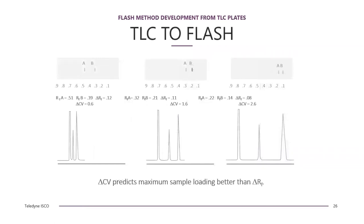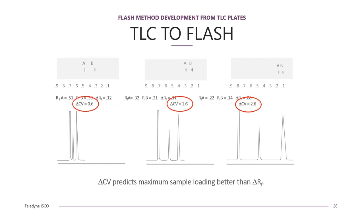In this example, the solvent strength was reduced for both a column and TLC plate for a series of compounds. The first eluting peak in the column run was the solvent used to dissolve the compounds. As the solvent strength is decreased, the difference in retention factor is smaller and the compounds don't appear to have much resolution on the TLC plate. However, the delta CV gets larger, causing better resolution on the column.